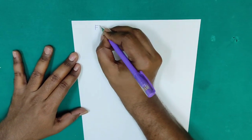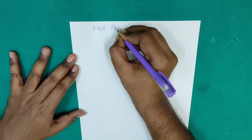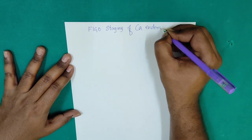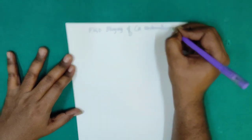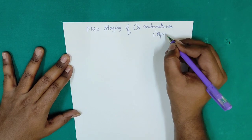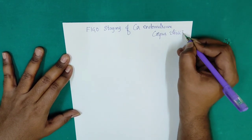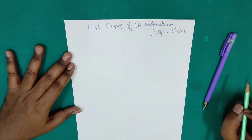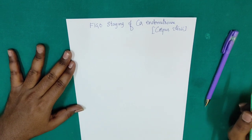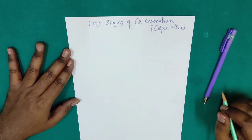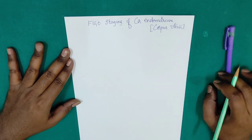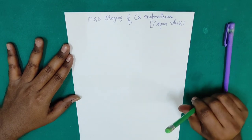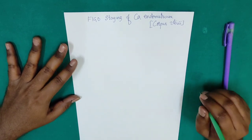I will be continuing with FIGO staging of CA endometrium. Endometrium is nothing but corpus uteri. Now listen here, doctors. In CA cervix also, I have given a schematic diagram which helps you remember the staging very easily. In CA endometrium also, I am going to give the schematic diagram. With this schematic diagram, you can remember the CA endometrium staging very easily.